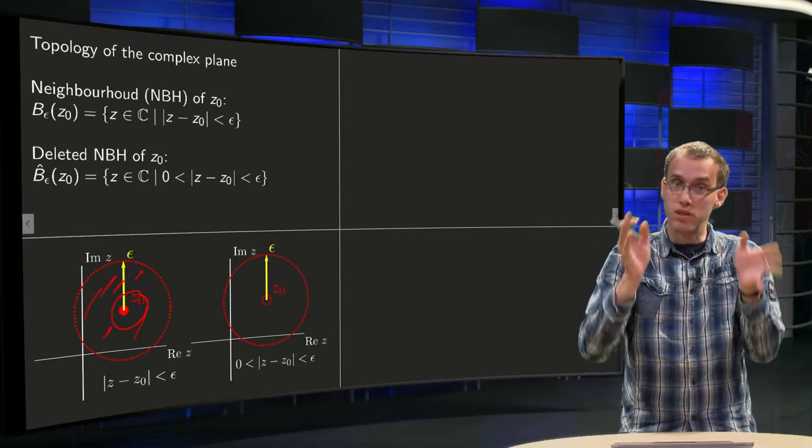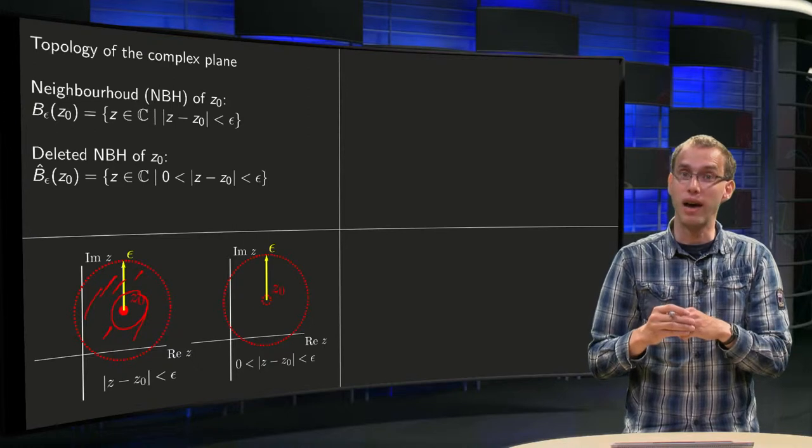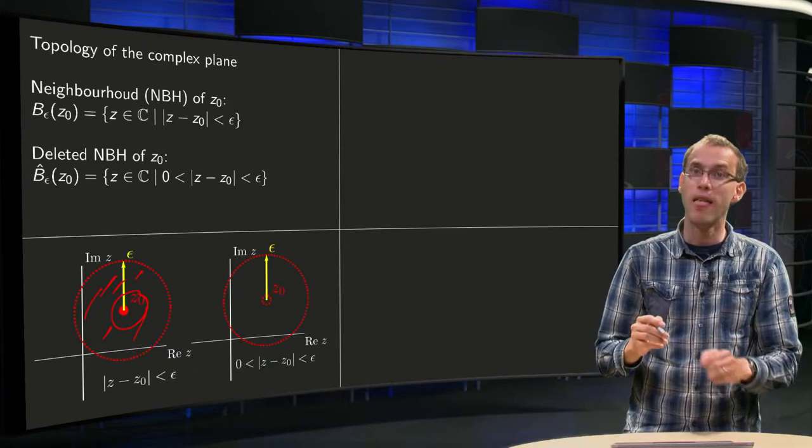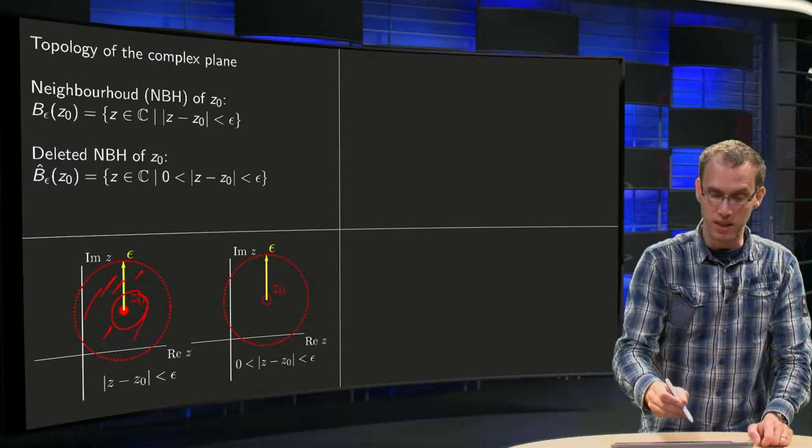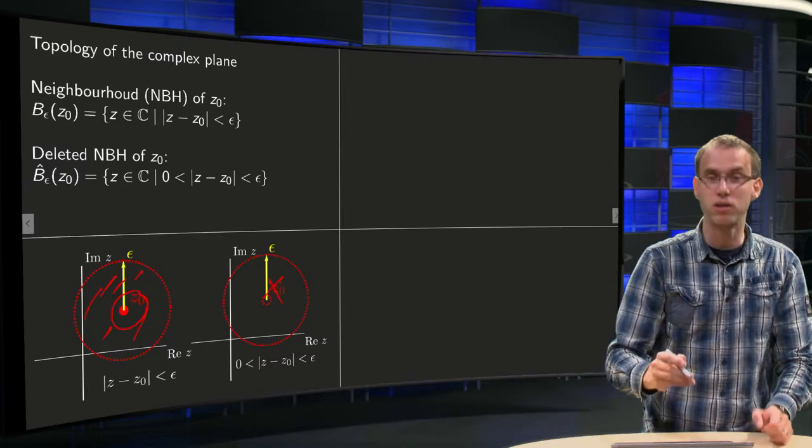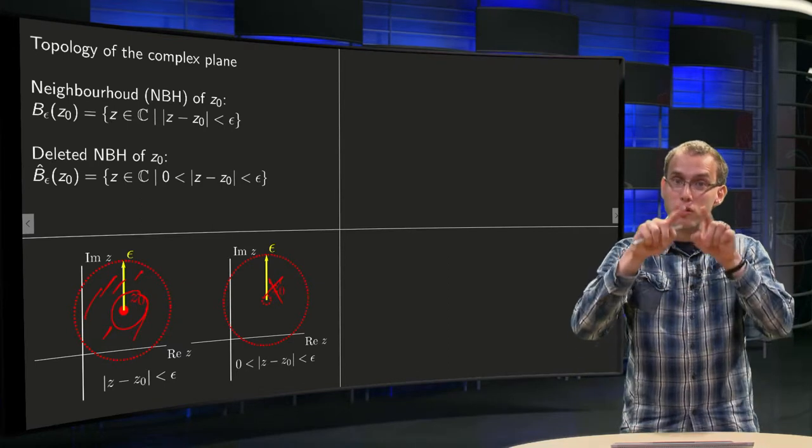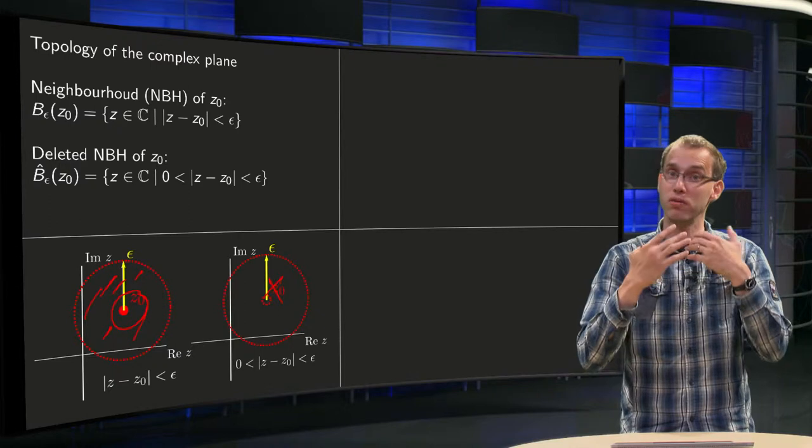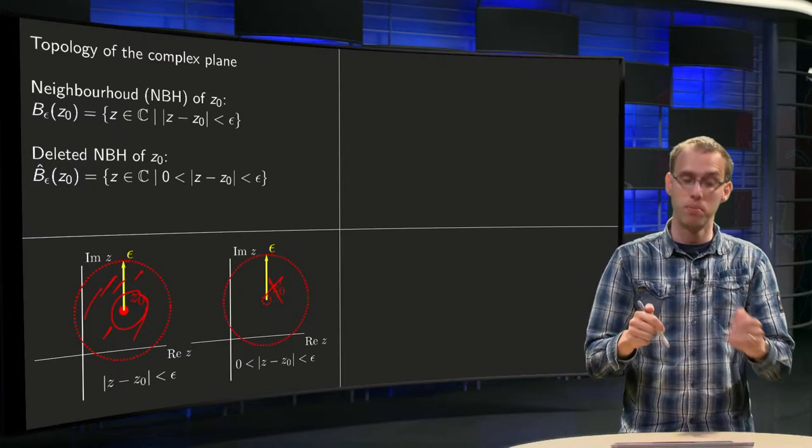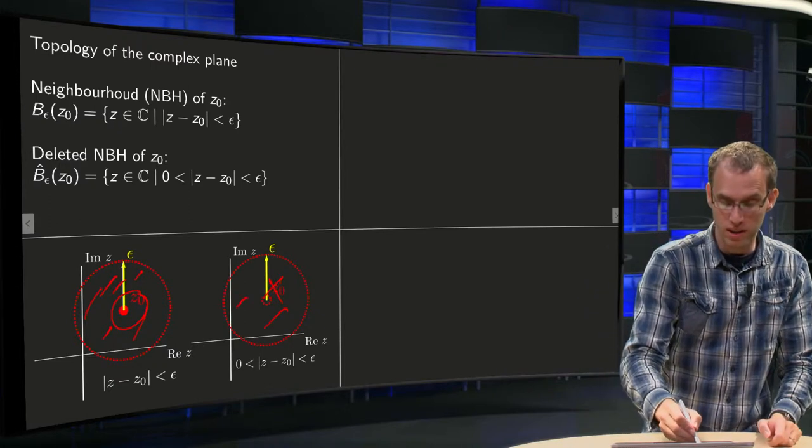But not the points at a distance exactly ε. So the deleted neighborhood of z₀ is exactly the same, except that z₀ is not part of the set. So I made a dotted circle around z₀ to indicate that z₀ is not part of the deleted neighborhood of z₀, but further it is completely the same.